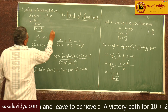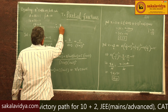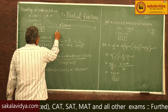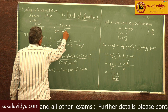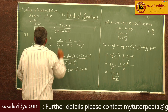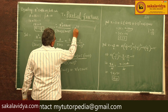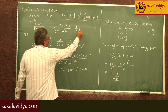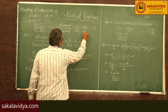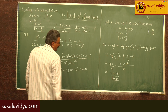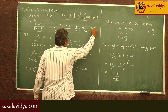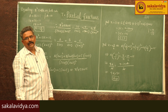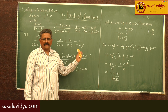Therefore, the partial fractions of the given expression are: 10/(2x + 3) + (-9/2)/(x + 3) + 5/(x + 3)². This completes the solution for problem number 2.